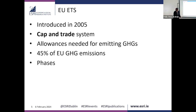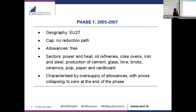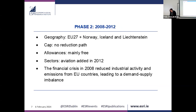Phase one ran from 2005 to 2007, covering EU 27 countries. There was no cap — they just made the same amount of allowances as existing pollution and gave them back for free. It covered emission-intensive sectors like power and heat, oil refineries, and cement. What happened is there was an oversupply of allowances, which crashed the market and the price fell to zero.